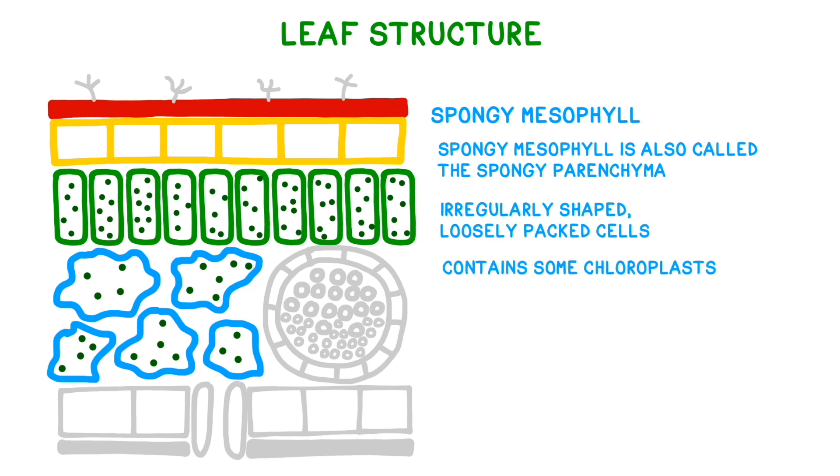The space in between these cells is called the intercellular space, and this allows for gas exchange in and out of the leaf.